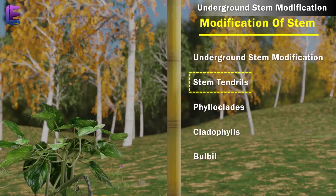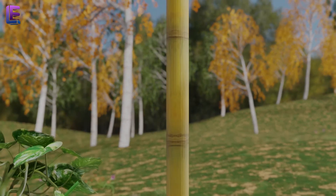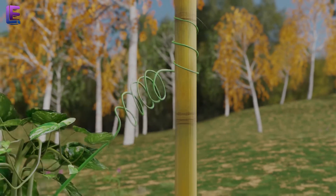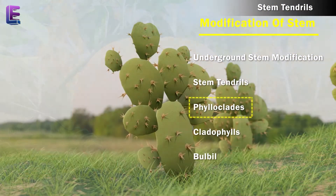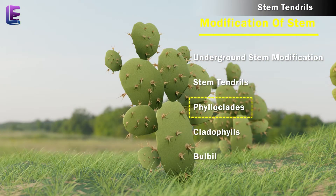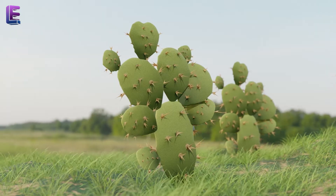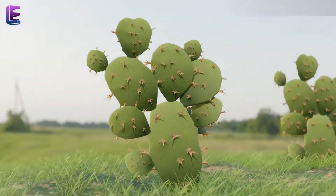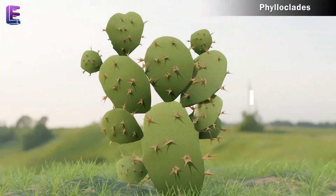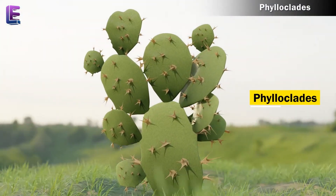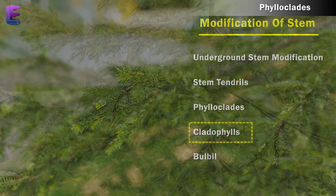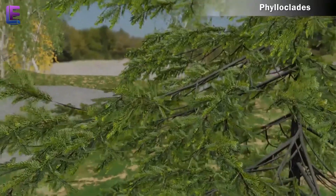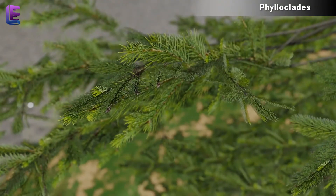2. Stem tendrils: They help in climbing. For example, pumpkin. 3. Phylloclades: In deserts, some stems undergo transformation into fleshy and flattened structures called phylloclades. 4. Cladophylls: Cladophylls are branches that transform to help photosynthesis.